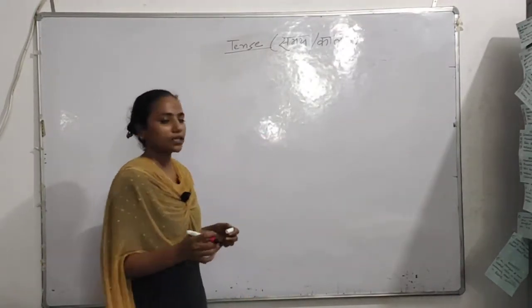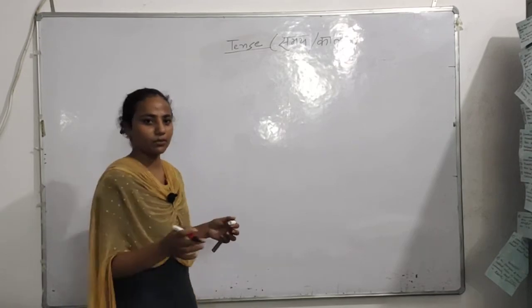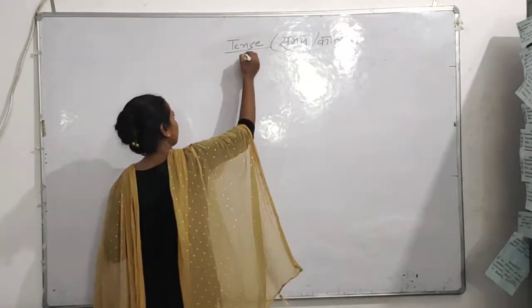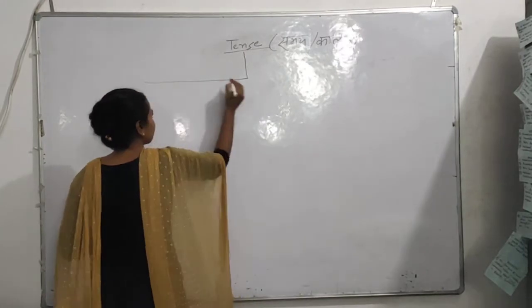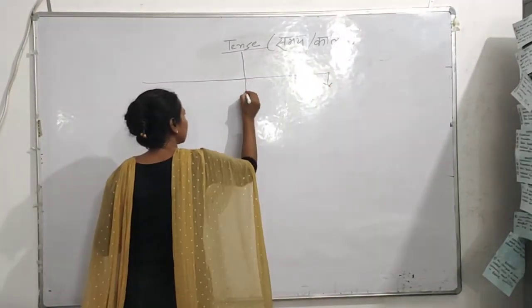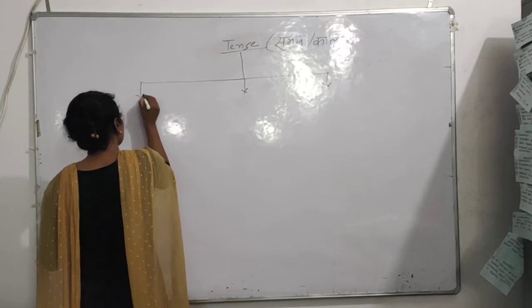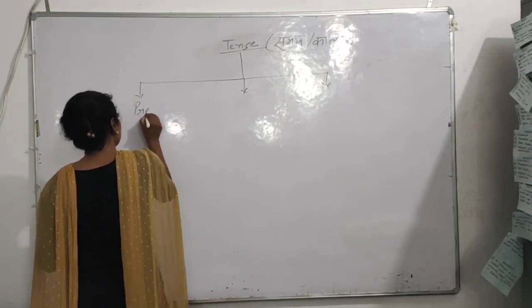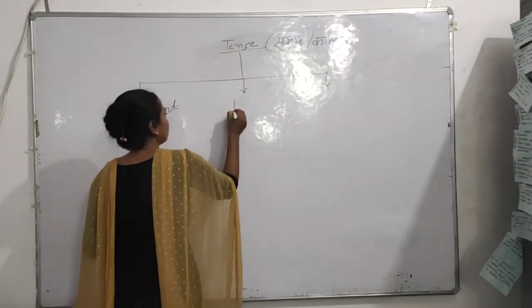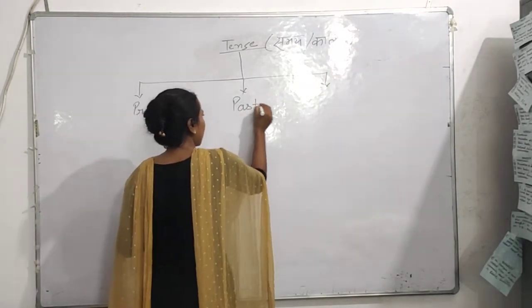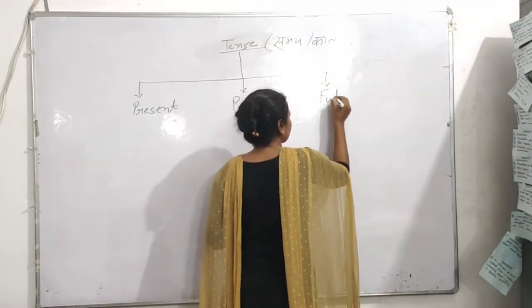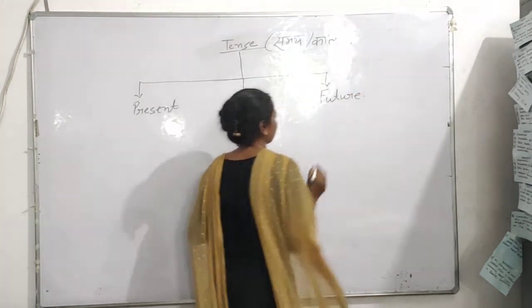Now, let's talk about the types or patterns. Tense has three patterns: Present, Past, and Future.